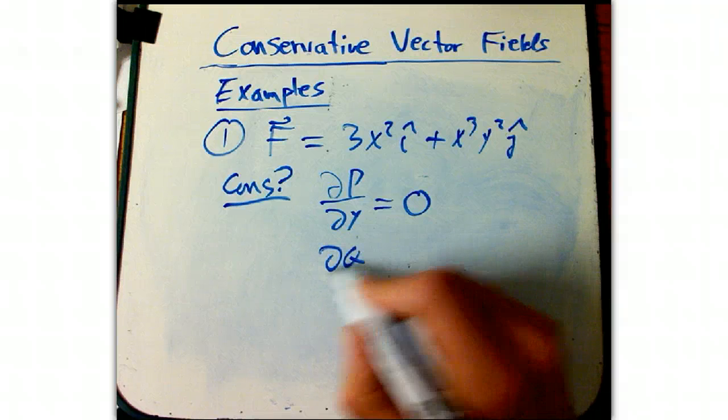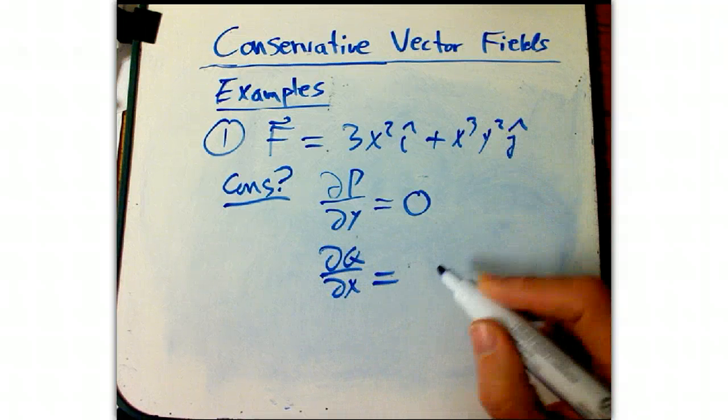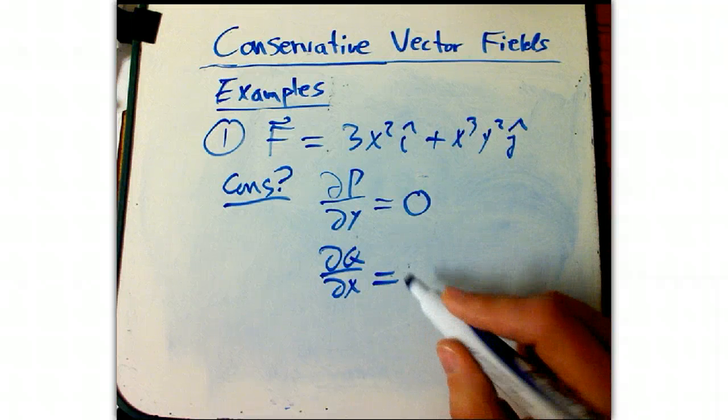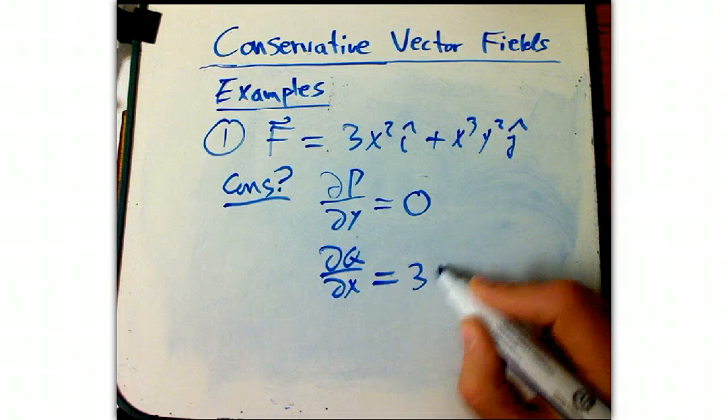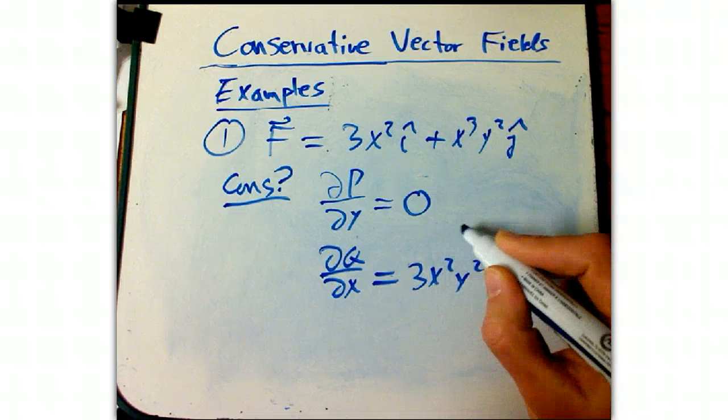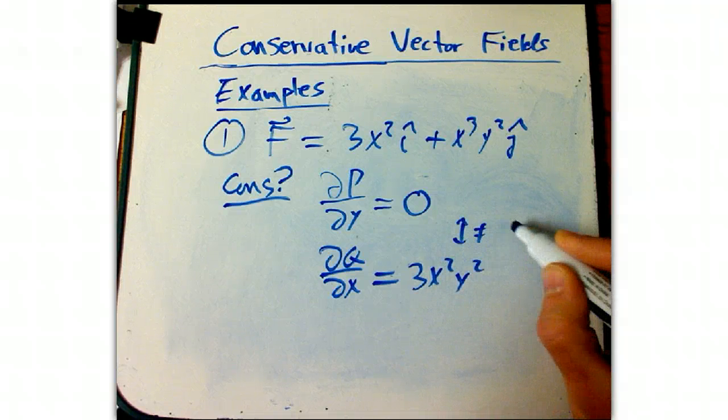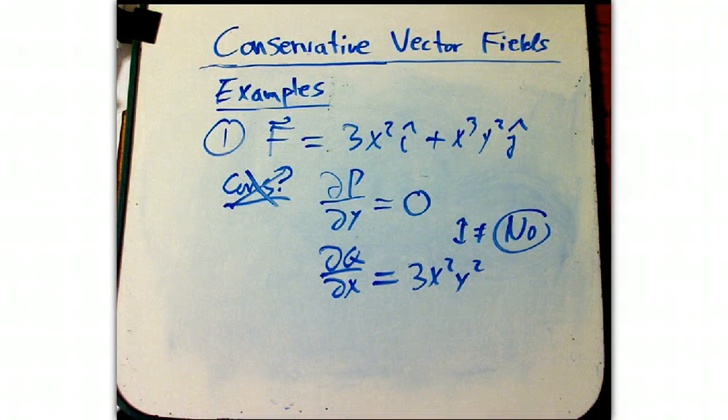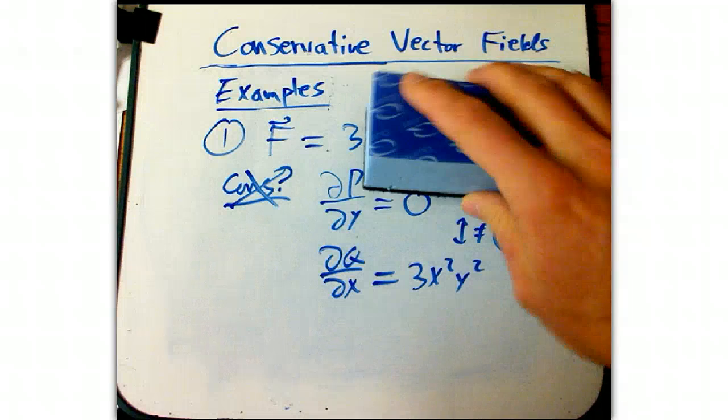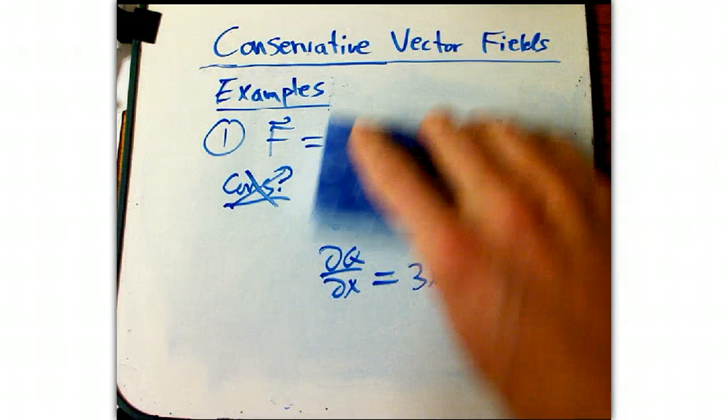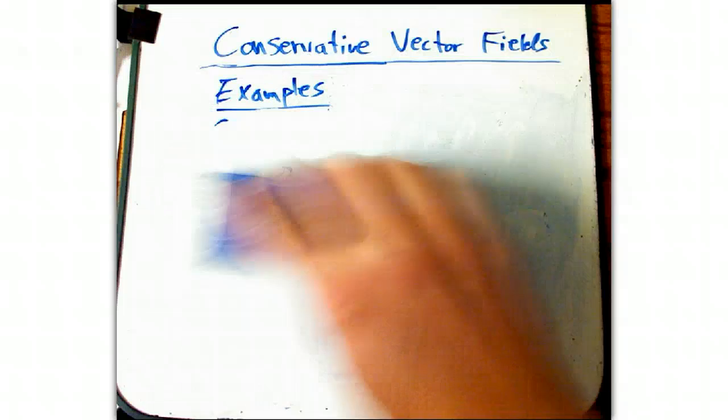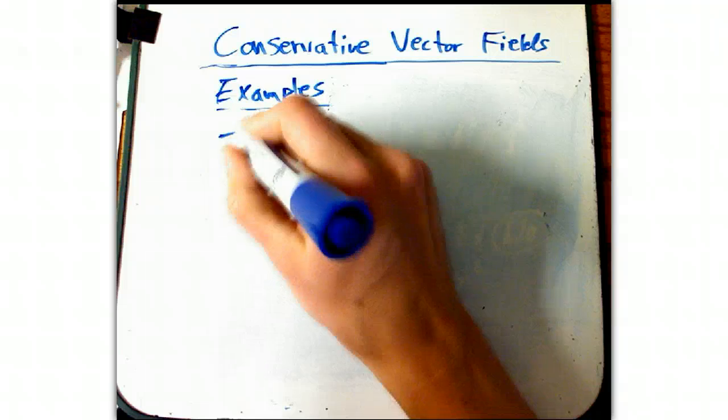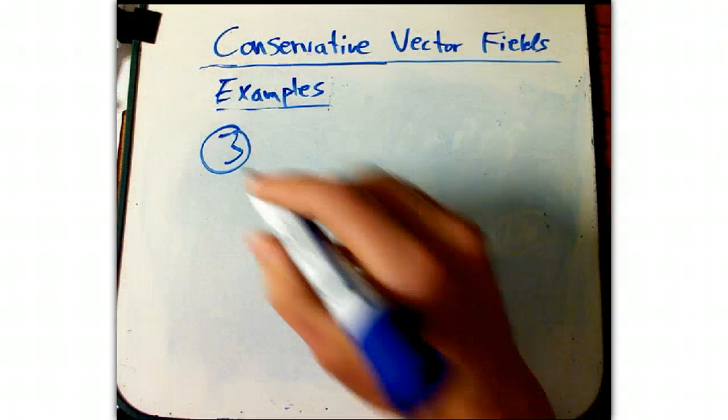And dQ/dx, that's not zero. That is equal to 3x squared y squared. They're not equal. So no, it's not conservative. That's an easy kind of problem. That's a nice kind of result if you're doing homework. It's like oh no. And then they can't really ask you much more. Because it's not one of our special things that all of our theorems apply to.